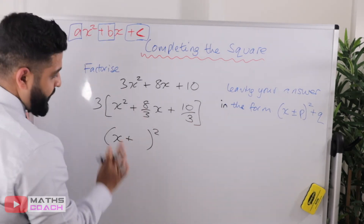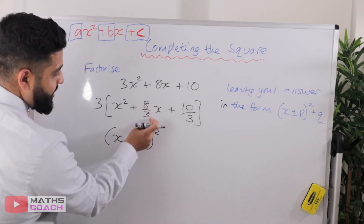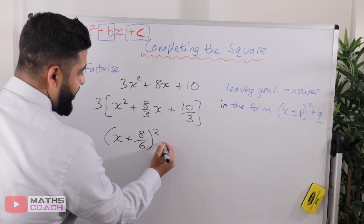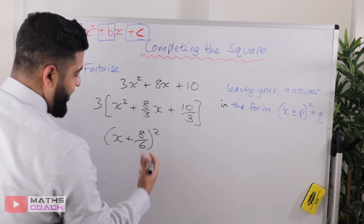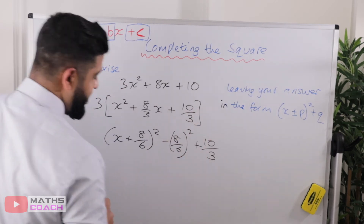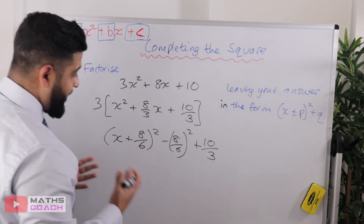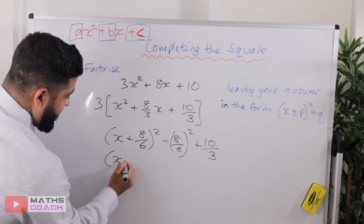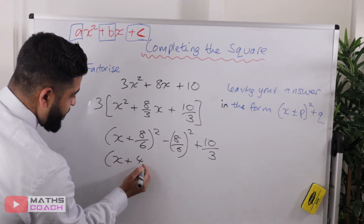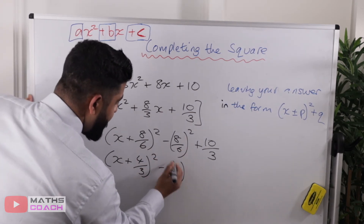We need to divide 8 over 3 by 2. Dividing by 2 doubles the denominator, so we get 8 over 6. We then take away 8 over 6 squared, and the 10 over 3 remains outside. Now 8 over 6 can be simplified by dividing both by 2: 8 divided by 2 is 4, and 6 divided by 2 is 3, giving us 4 over 3. So we write x plus 4 over 3 squared.